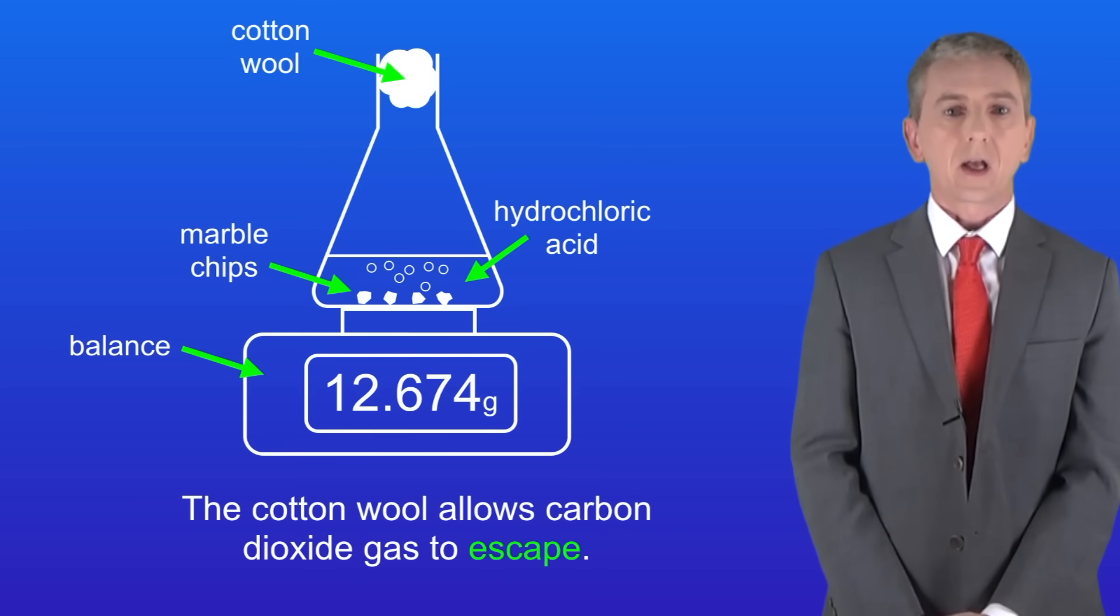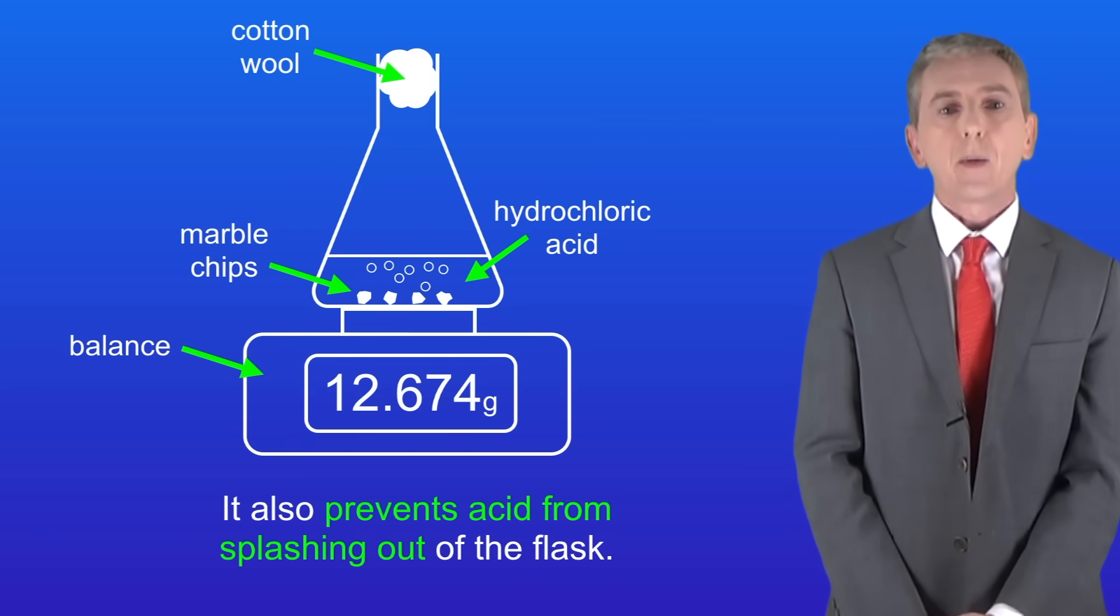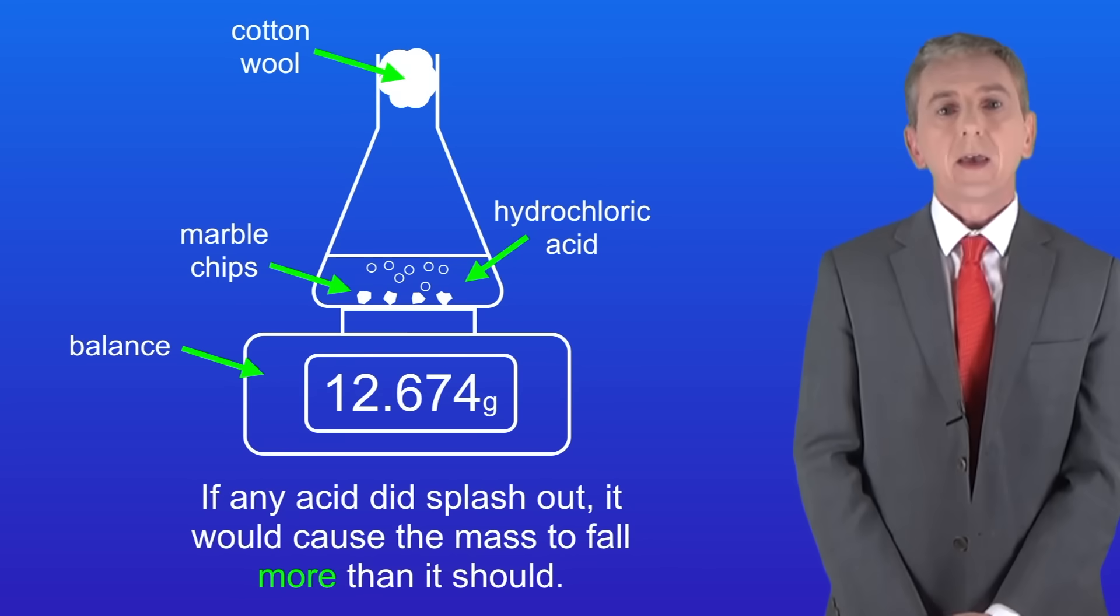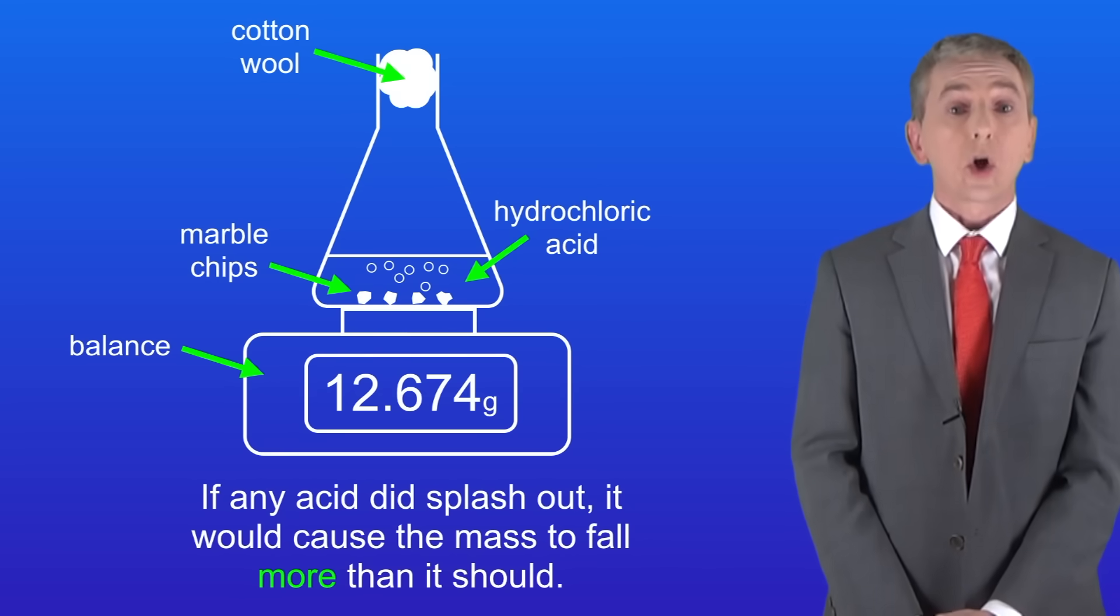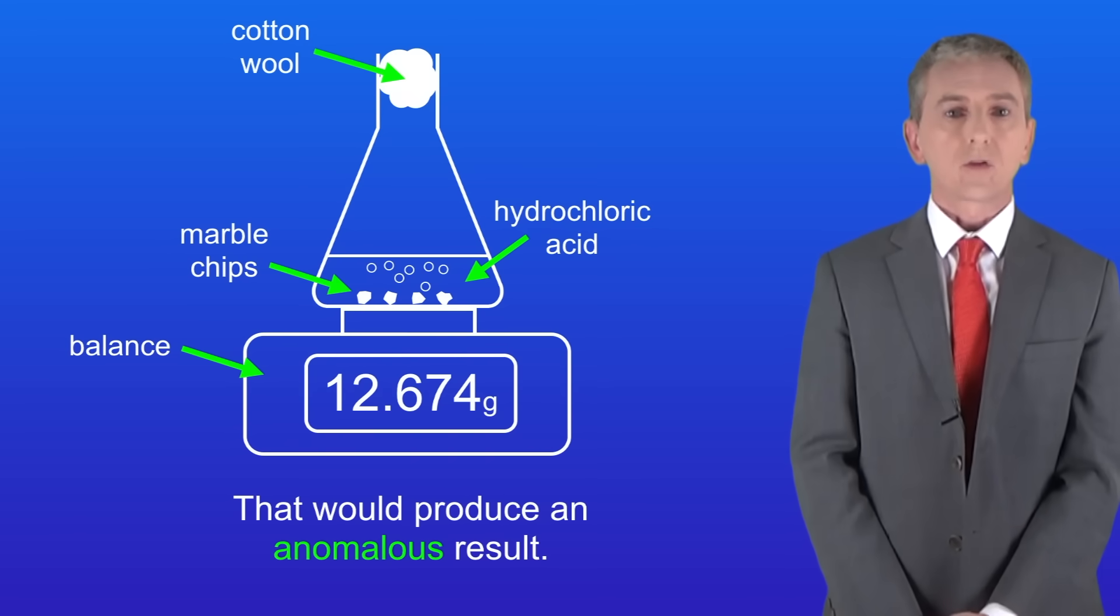Now one important point is that the cotton wool allows carbon dioxide gas to escape. However, it also prevents acid from splashing out of the flask. If any acid did splash out it would cause the mass to fall more than it should and that would produce an anomalous result.